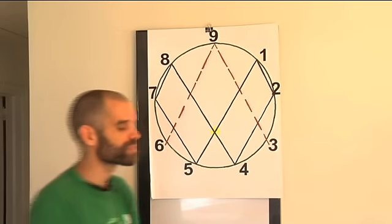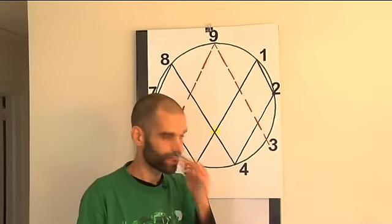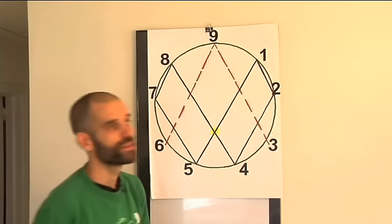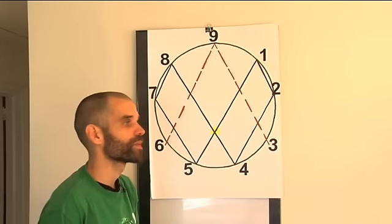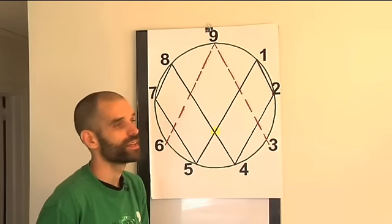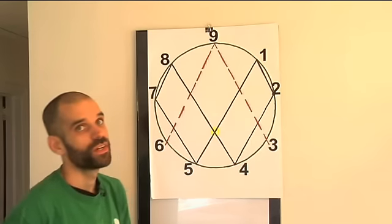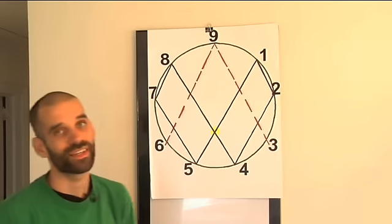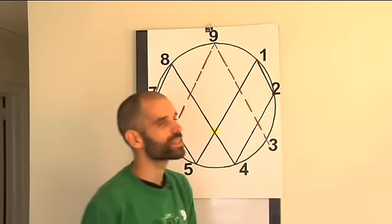So what is the nine? Well, what happens if you double nine? Nine doubled becomes eighteen, right? Eighteen doubled is thirty-six, thirty-six doubled is seventy-two. So if you add any of those numbers together, eighteen, thirty-six, seventy-two, they always equal nine.